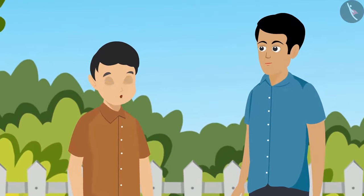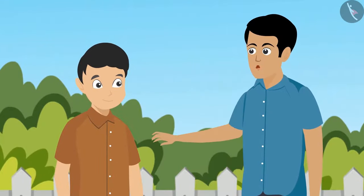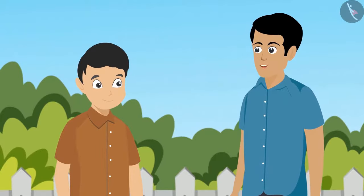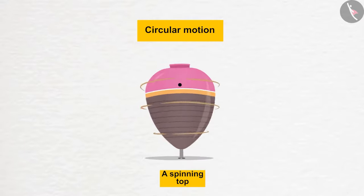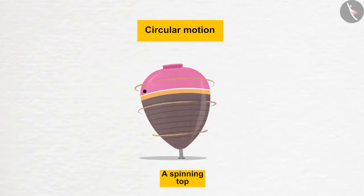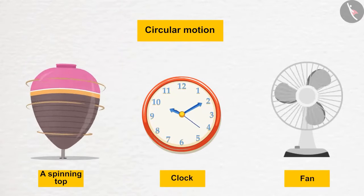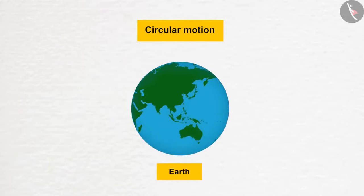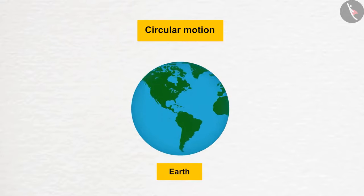But if it does not change its place, then how is it in motion? Pavan, the bambaram — the spinning top as a whole — doesn't change its place. But if we put a mark on the spinning top with a marker, then you will notice that the mark changes its place while it rotates and comes back to its position again and again. The dials of a clock and fans are also examples of circular motion. And our earth is also in circular motion, which causes days and nights.